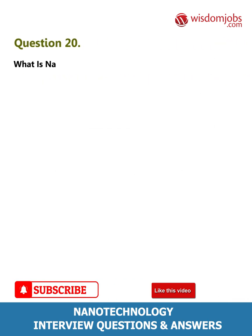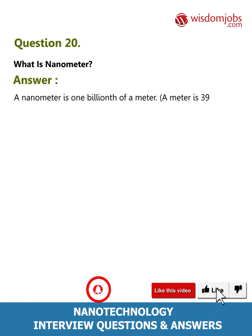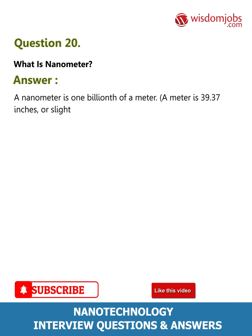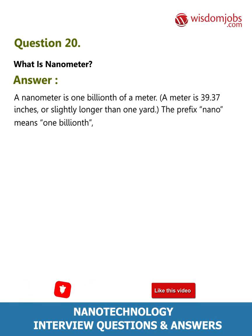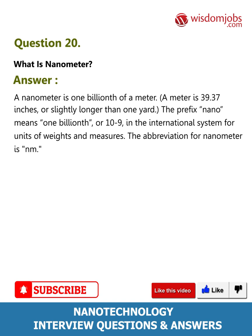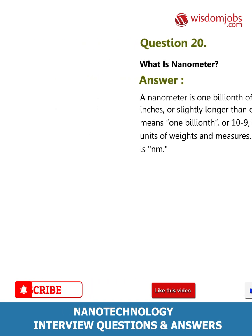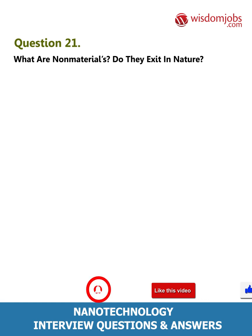Question 20: What is a nanometer? A nanometer is one billionth of a meter. A meter is 39.37 inches, or slightly longer than one yard. The prefix 'nano' means one billionth, or 10 to the negative 9, in the international system for units of weights and measures. The abbreviation for nanometer is nm.